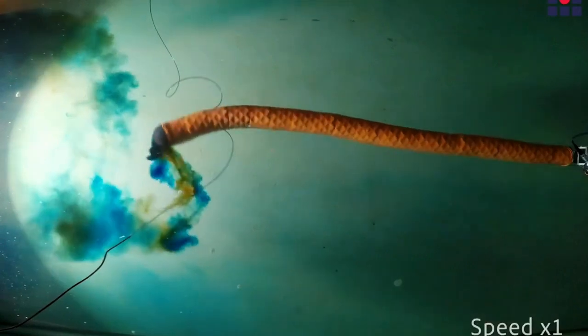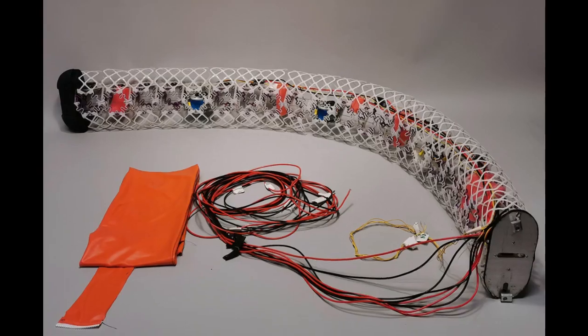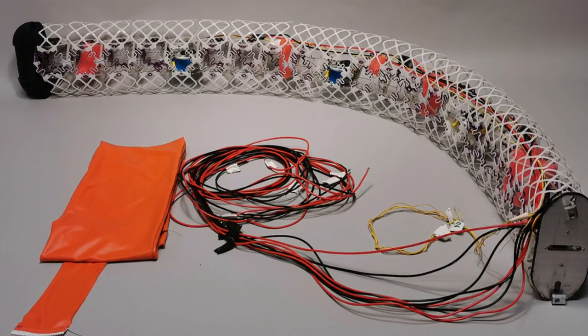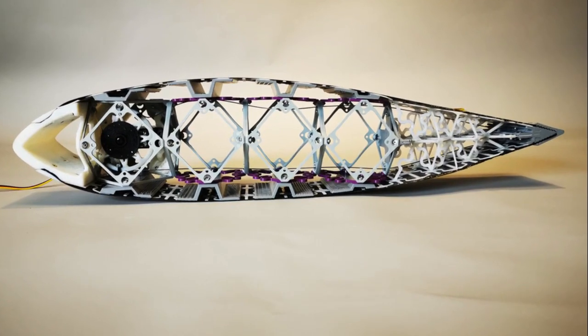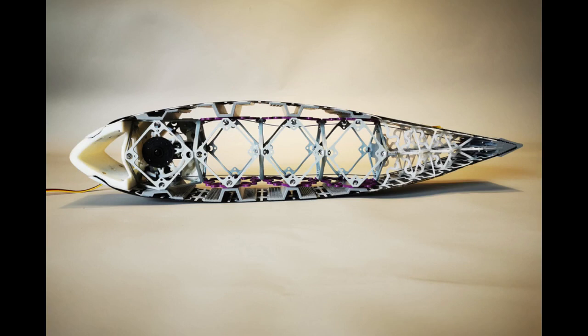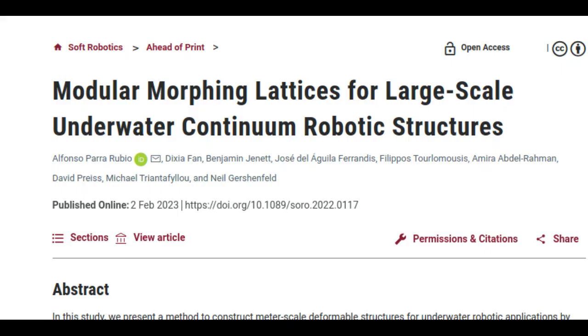The team has demonstrated the new system in two different example configurations, one like an eel and the other a wing-like hydrofoil. The principle itself, however, allows for virtually unlimited variations in form and scale. The work is reported in the journal Soft Robotics.